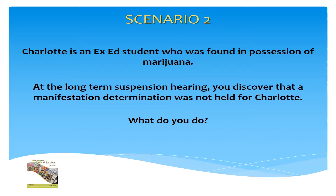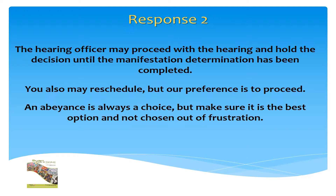Scenario 2. Charlotte is an exceptional ed student who was found in possession of marijuana. At the long-term suspension hearing, you discover that a manifestation determination was not held for Charlotte. What do you do? The hearing officer may proceed with the hearing and hold the decision until the manifestation determination has been completed. You also may reschedule, but our preference is to proceed. An abeyance is always a choice, but make sure it is the best option and not chosen out of frustration.